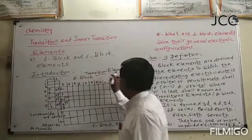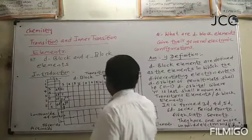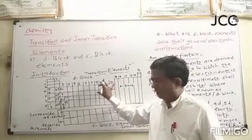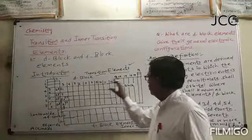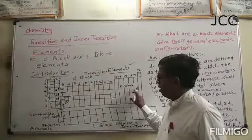Transition elements separate here. So here is the block here. And here is the inner transition element. What is the transition element? S-block and P-block. This is S-block and P-block. The block is d-block.